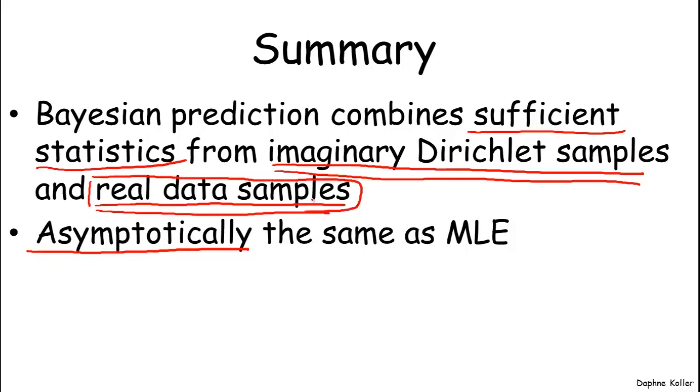And therefore, the prior is going to become vanishingly small in terms of the contribution that it makes. So at the limit, the Bayesian prediction is the same as maximum likelihood estimation.